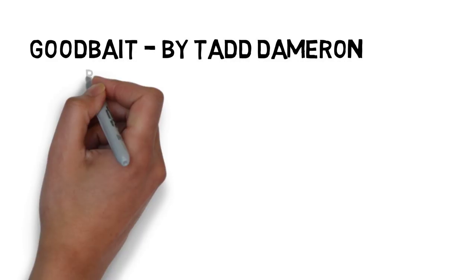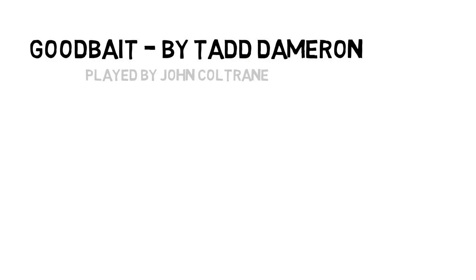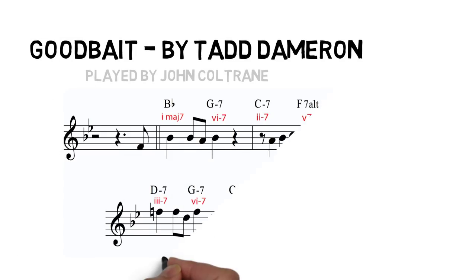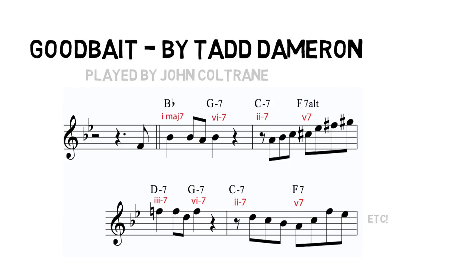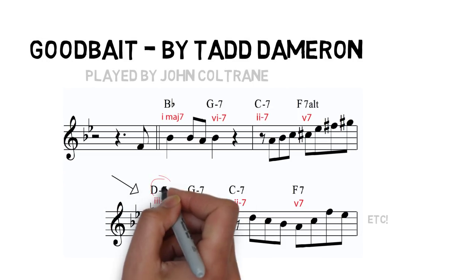Here's another great example: John Coltrane playing Tadd Dameron's 'Good Bait.' You may have noted on the second repetition of the progression that instead of using the B-flat chord again, the chord was D minor — a very common substitution for the root chord, creating two pairs of two-fives.